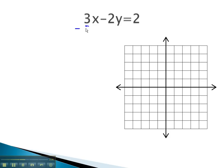We will do this by subtracting 3x from both sides. As we do, we have negative 2y equals... Remember, on the right side, these are not like terms, so they cannot be combined. Negative 3x plus 2.